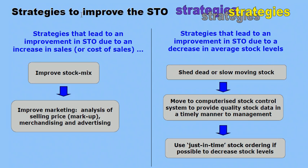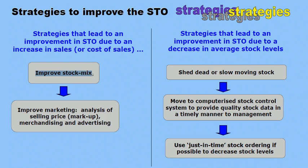Let's look at strategies that lead to an improvement in stock turnover due to an increase in sales. The most obvious one is improving the stock mix — try to offer stock that better matches your customer profile's tastes and preferences, which should lead to an increase in sales. Secondly, improve your marketing: analyse your selling price and markup, improve your merchandising, and improve your advertising. These two strategies — improve stock mix and improve marketing — should work to improve the stock turnover.